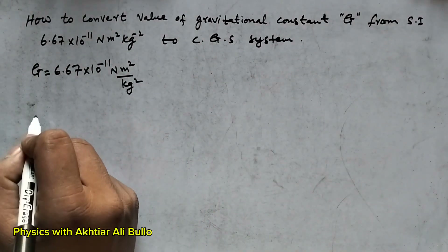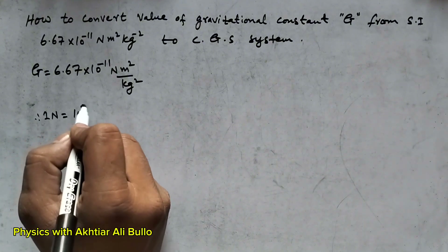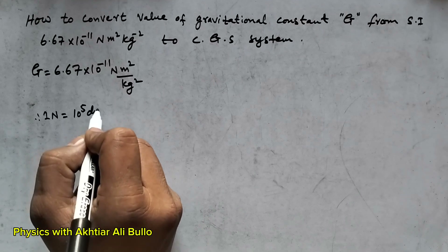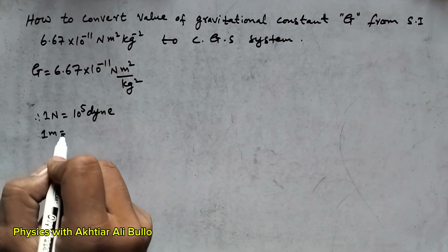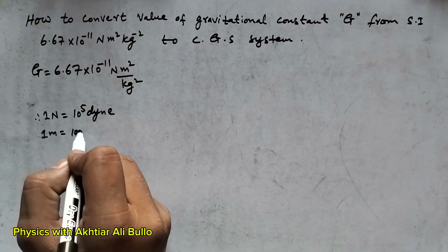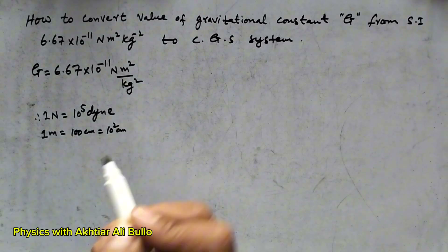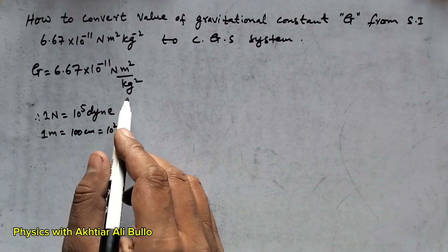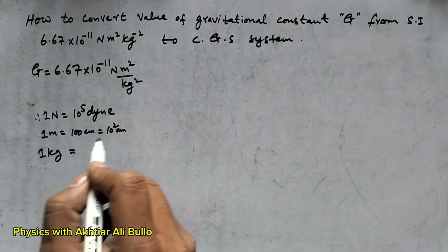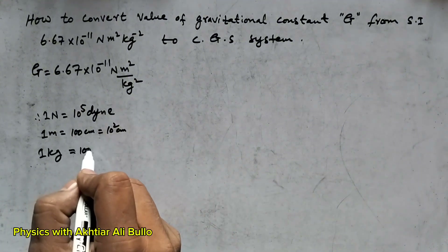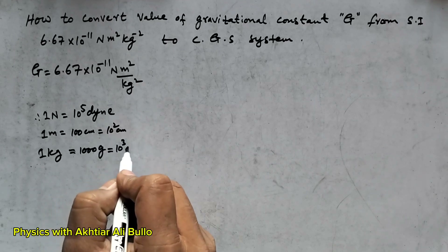As we know, 1 Newton is equal to 10⁵ dyne, 1 meter is equal to 100 centimeters or 10² centimeters, and 1 kilogram is equal to 1000 grams or 10³ grams.